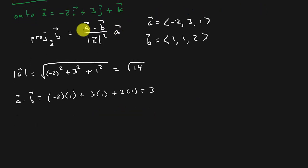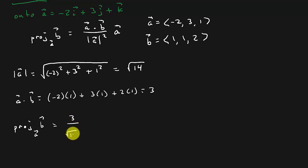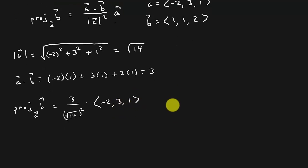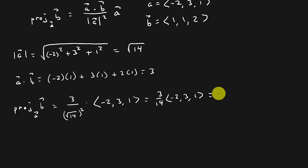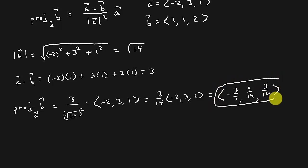Now we just plug into the formula. The vector projection of B onto A equals the dot product — which is 3 — over the magnitude squared, times vector A. So that's 3 over 14, times ⟨-2, 3, 1⟩. Our solution is ⟨-3/7, 9/14, 3/14⟩. And this would be your vector projection.